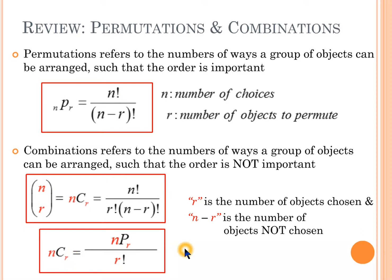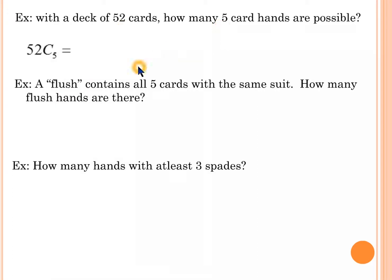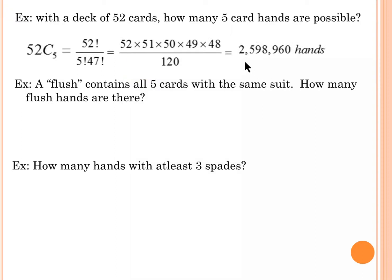Now that we've reviewed the formulas for permutations and combinations, let's do a few review problems. With a deck of 52 cards, how many five-card hands are possible? That's simply going to be 52 choose 5, because we have 52 cards and we're choosing five of them. That's going to be 2,598,960 hands.